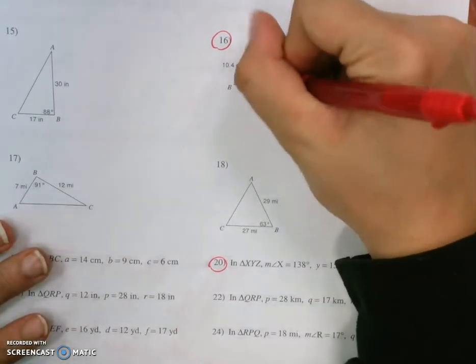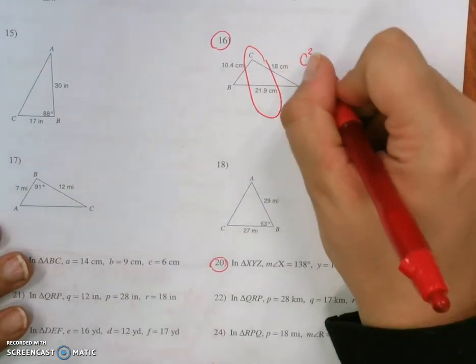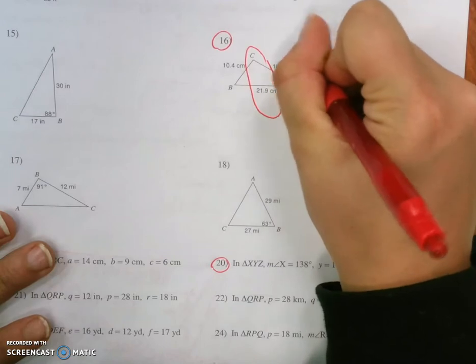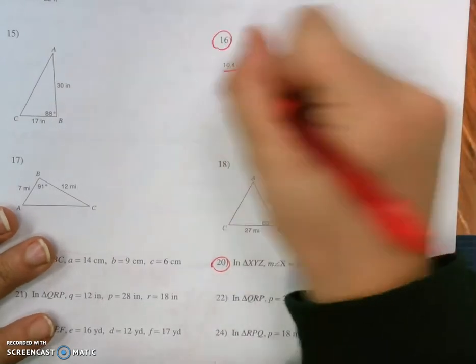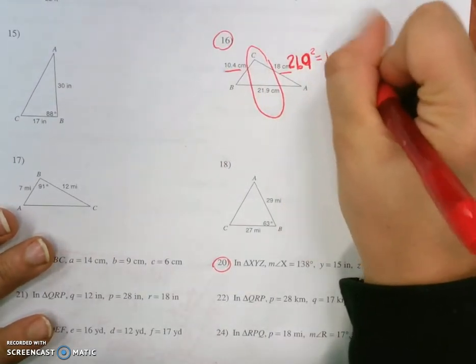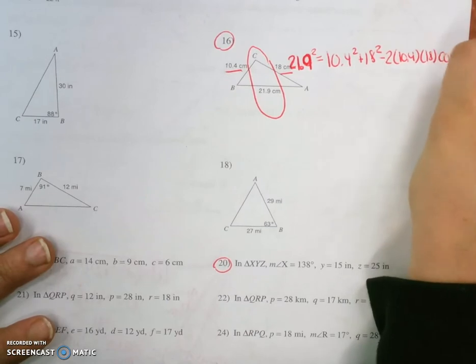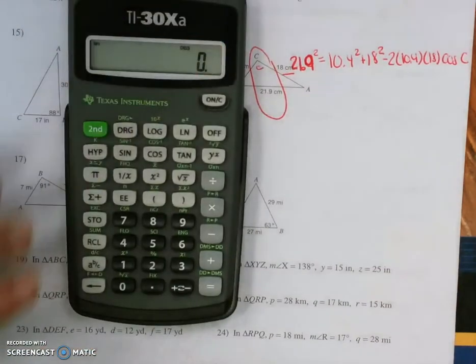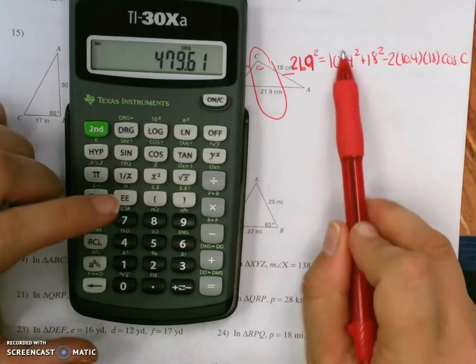So let's try, I guess I'll go for C first, why not? So C squared equals, actually is it C squared equals? Nope. What's it supposed to be? 21.9 squared equals 10.4 squared plus 18 squared minus 2 times 10.4 times 18 cosine C. We don't know what the C is.